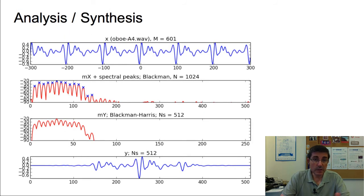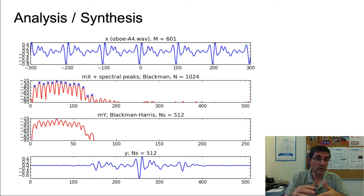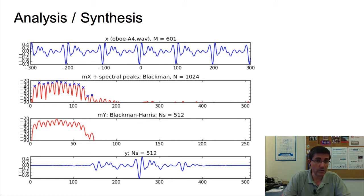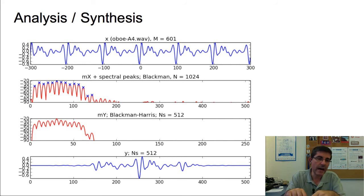We can put together an analysis-synthesis approach using this idea. Starting from a fragment of a sound — in this case an oboe sound — we compute the spectrum, find the peak locations using any window, any FFT size appropriate for analysis, and then do additive synthesis in the frequency domain by generating Blackman-Harris main lobes from those peak locations. The synthesis FFT can be a different size, and the window is Blackman-Harris. Taking the inverse, the re-synthesized sound should be identical or similar to the original, now with the Blackman-Harris window applied.